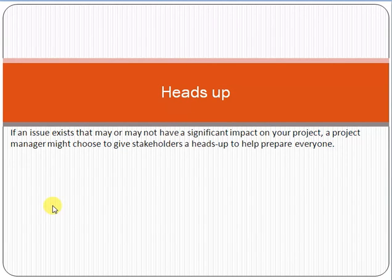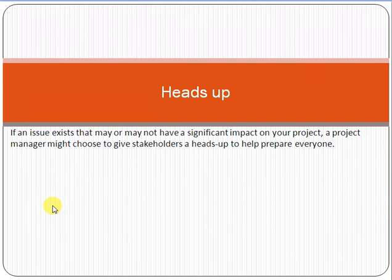Heads up means that if you know a bad thing is going to happen in the future — for example, you know this project is going to fail — it is better to tell about this as early as possible, like one or two months before. This way, the stakeholders get a heads up and become ready for it, so they can take whatever decision they want accordingly.